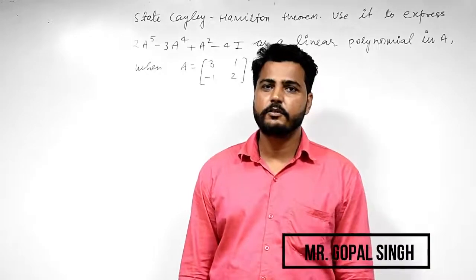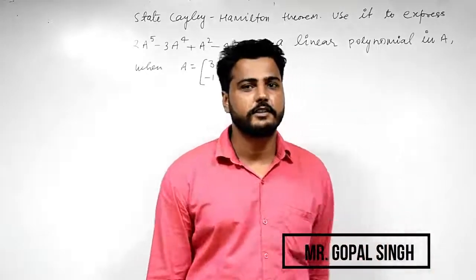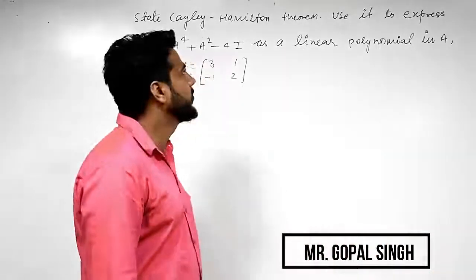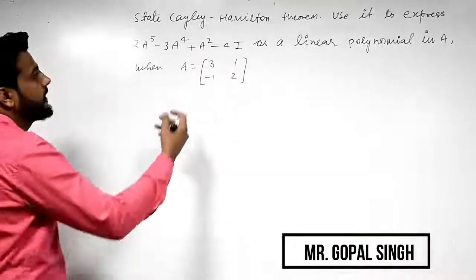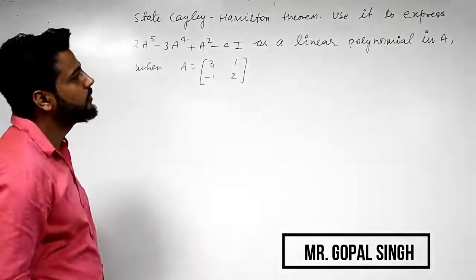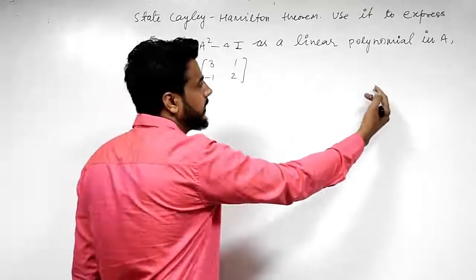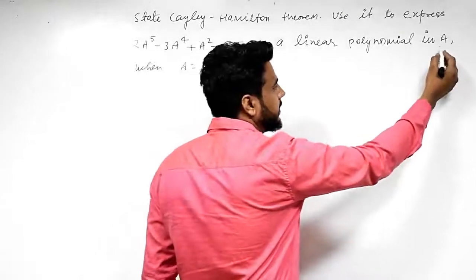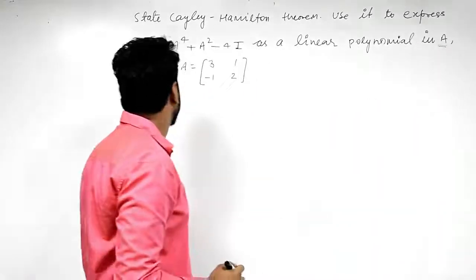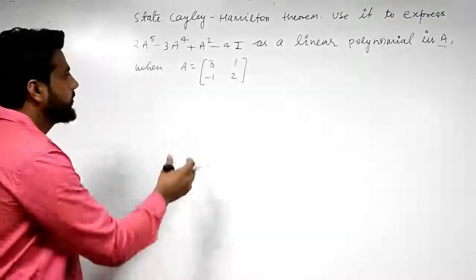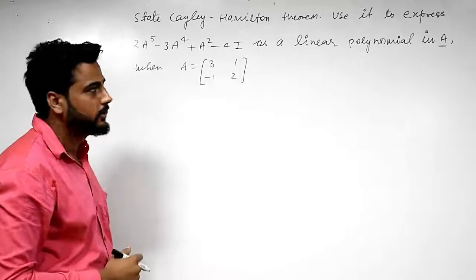Hello students, welcome to another problem related to matrices. Now we have the problem: use the Cayley-Hamilton theorem to express this as a linear polynomial in A, when A equals the matrix [3, 1; -1, 2].